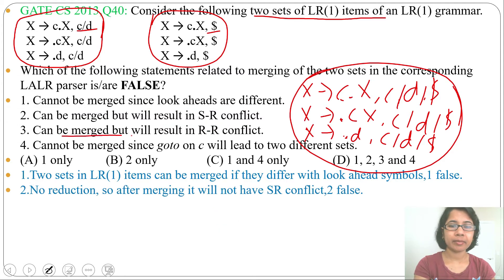Next, statement 3: can be merged but will result in reduce-reduce conflict. There is no reduction, so there is no chance of RR conflict. Statement 3 is also false.